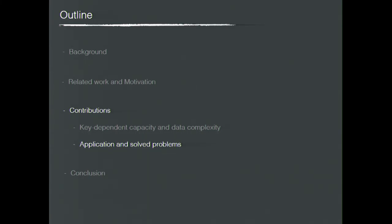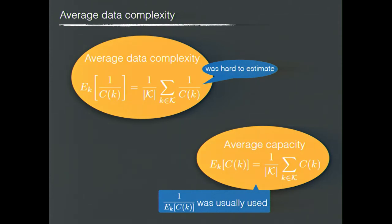With knowledge of the data complexity distribution, we can discuss questions which were not very clear before. Regarding average data complexity, the actual average data complexity is formally defined, and this was hard to estimate before. Usually, people use the inverse of the average capacity as a measurement for the average data complexity.